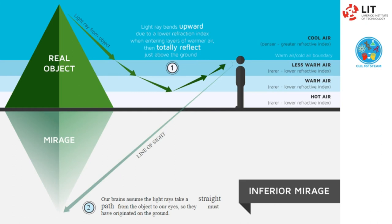Inferior mirages are not stable. Hot air rises and cooler air, being more dense, descends. So the layers will mix, giving rise to turbulence, and the image will be distorted accordingly. In this illustration, we can see the viewer is expecting the line of sight to be straight. However, because of the layers in the air — hot air at the lowest level, going up through warm air, less warm air, and cool air — then the line is being deflected. That means that the image is not where it would appear to be.